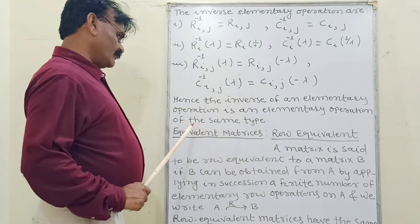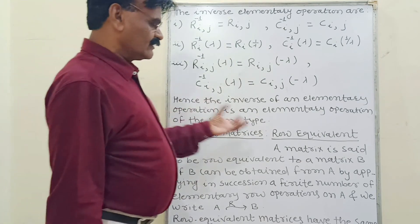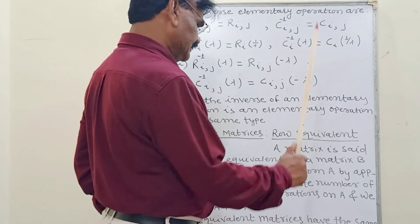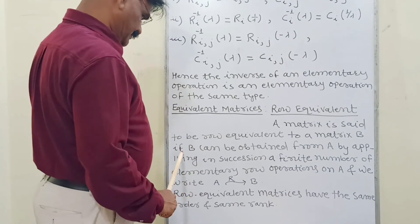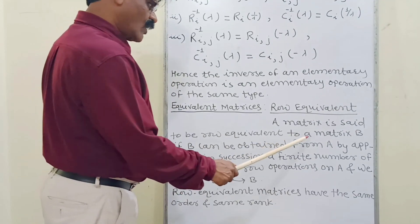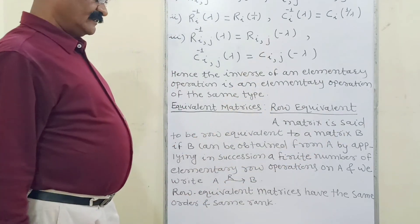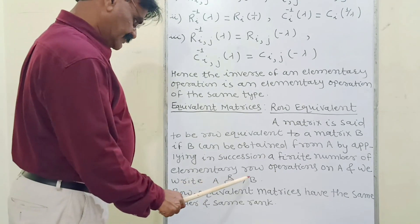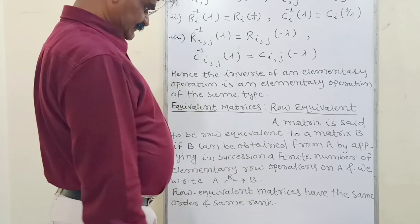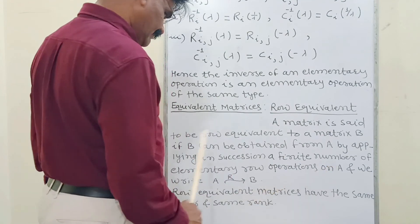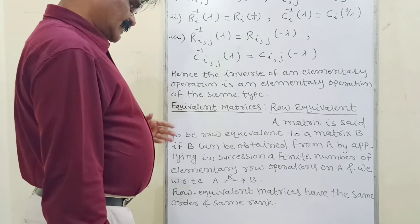Next topic: Equivalent Matrices — row equivalent and column equivalent. A matrix A is said to be row equivalent to a matrix B if B can be obtained from A by applying in succession a finite number of elementary row operations on A. We write: A → (finite number of row operations) → B. Row equivalent matrices have the same order and the same rank.